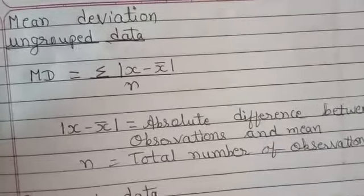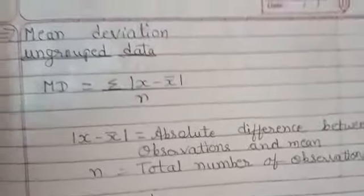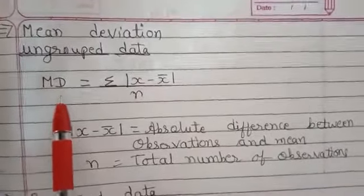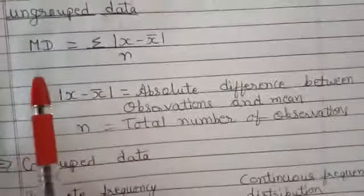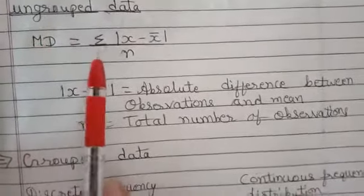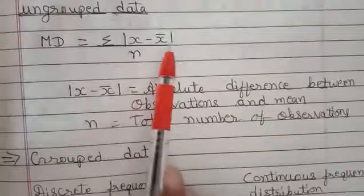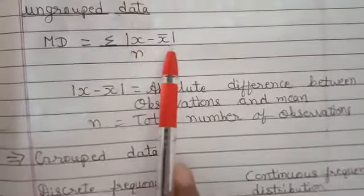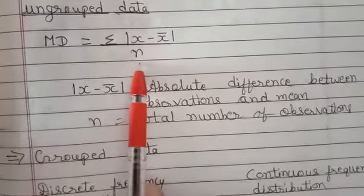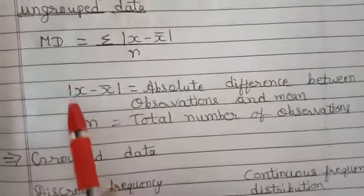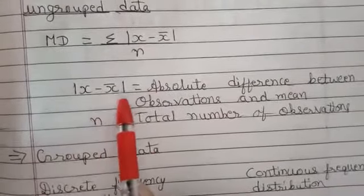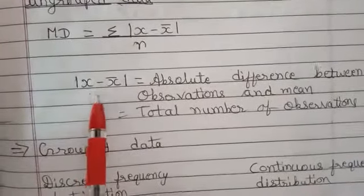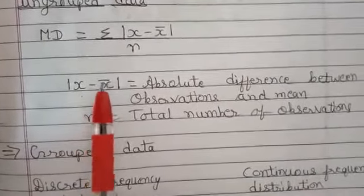Mean deviation is denoted by MD, that is capital M and D. The formula for finding mean deviation for ungrouped data is sigma |x minus x-bar| upon n, where x is your observation, x-bar is your mean, and n is your number of observations. Absolute difference means we ignore the negative sign.